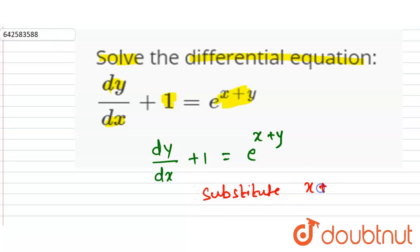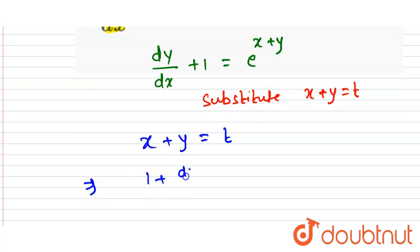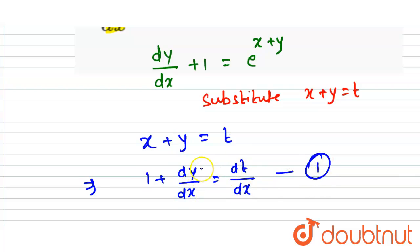Substitute x plus y equals t. When we differentiate this with respect to x, we get 1 plus dy/dx equals dt/dx. This is equation number 1. So in place of 1 plus dy/dx, we will put dt/dx.